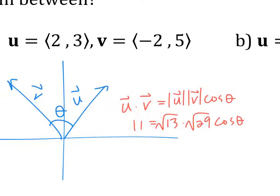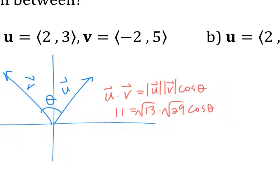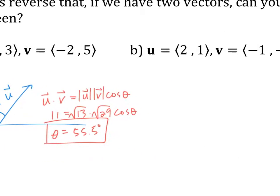For part A, the angle is 55.5 degrees. For part B, if you finish that one, the angle is 135 degrees.